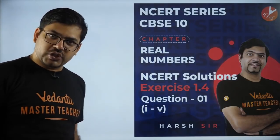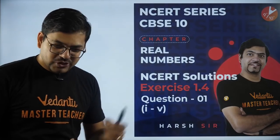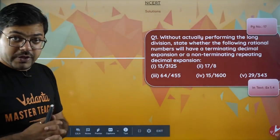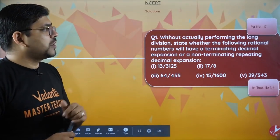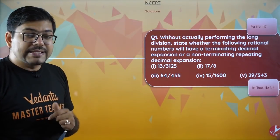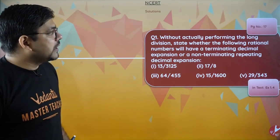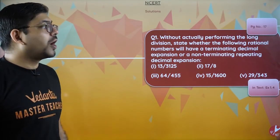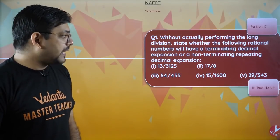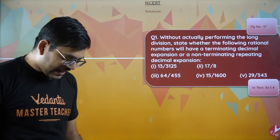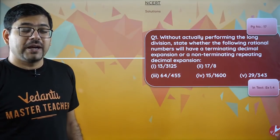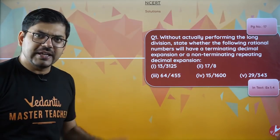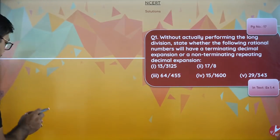Without wasting much time, here is the first question. The question says: without actually performing the long division, state whether the following rational numbers will have a terminating decimal expansion or a non-terminating repeating decimal expansion. This is a rational number, but the only doubt is whether this is terminating or non-terminating. So let's see how we can check it.